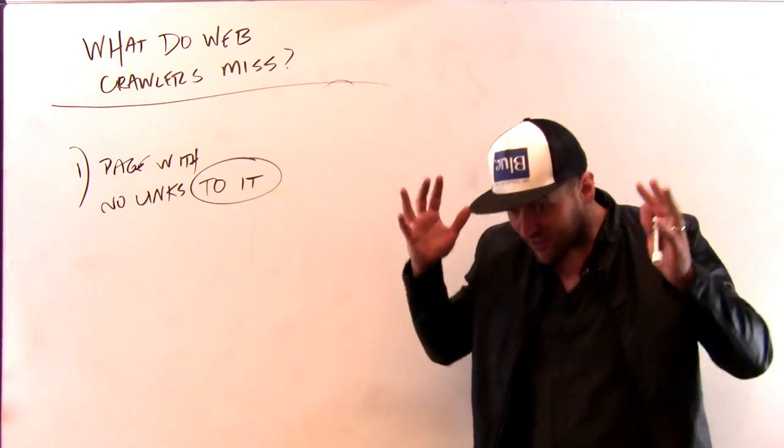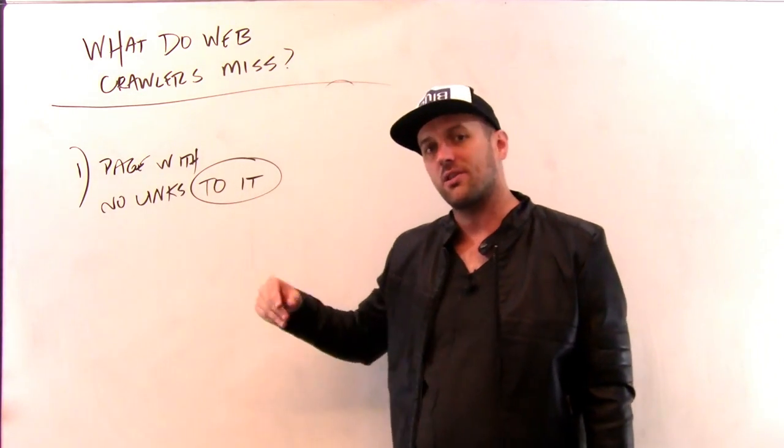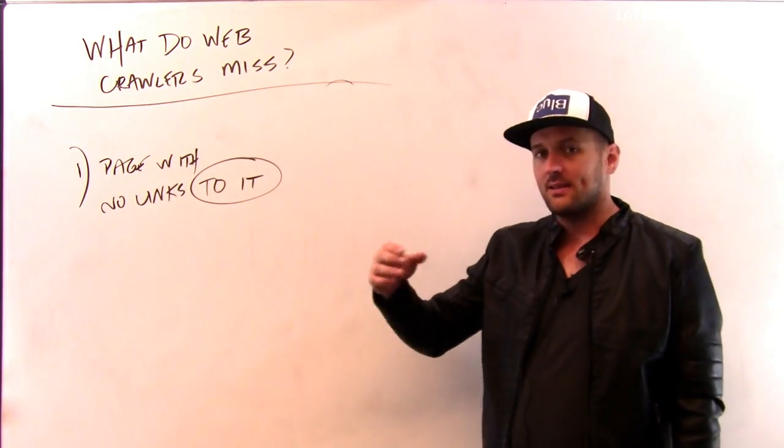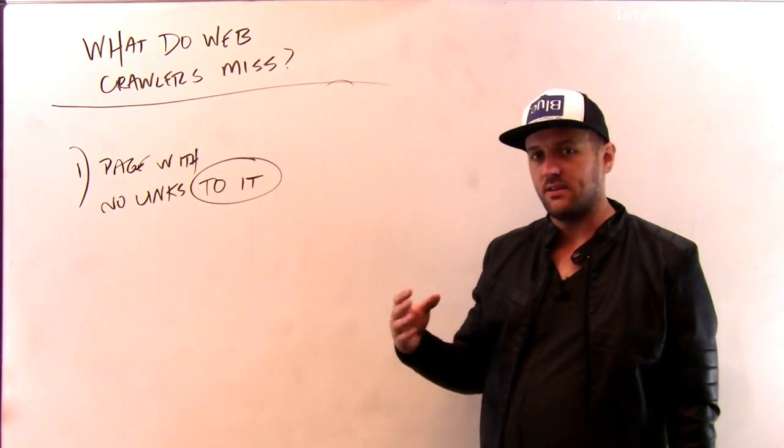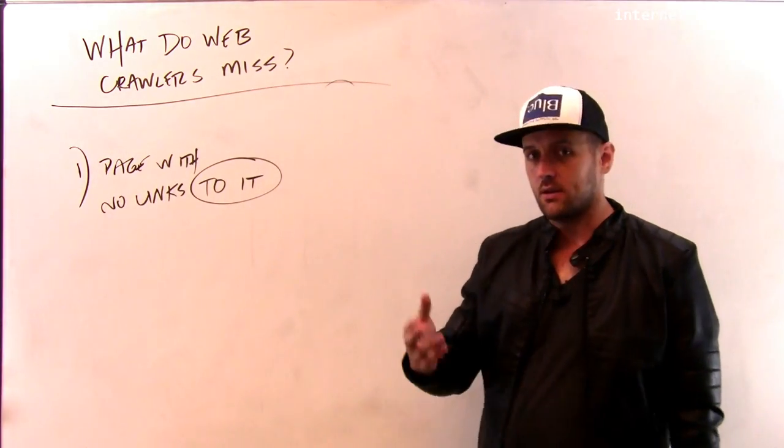So if you can never get to this page by clicking on a link on another page, then a crawler, unless the crawler starts at that page, which is unlikely, the crawler will never find this page because the crawler is following links and the links are supposed to point it to pages that it's supposed to find. And if those links don't point to a page, then the crawler will never find it.